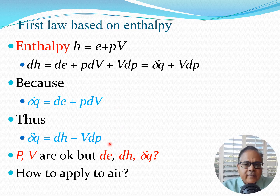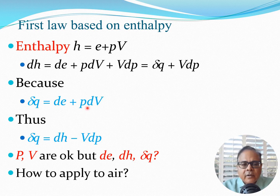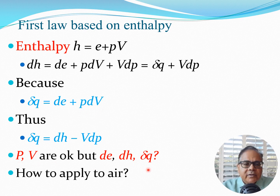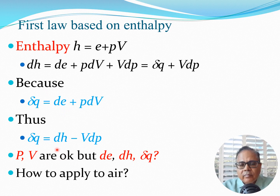I now have two equations highlighted in blue: both express delta q — one relates it to e, and one relates it to h. On the right-hand side I have equations more amenable to aerodynamics since we have a good idea about pressure and volume. However, dh, δq, and de are still not easy to obtain from general formulas for air.